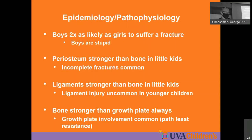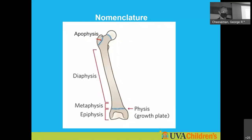Kids tend to have fractures before they have ligamentous injuries. Bones are stronger than the growth plate — even the immature bone is stronger than the growth plate. Fractures like to find the path of least resistance, and so if they find their way to the growth plate, they tend to propagate through it.